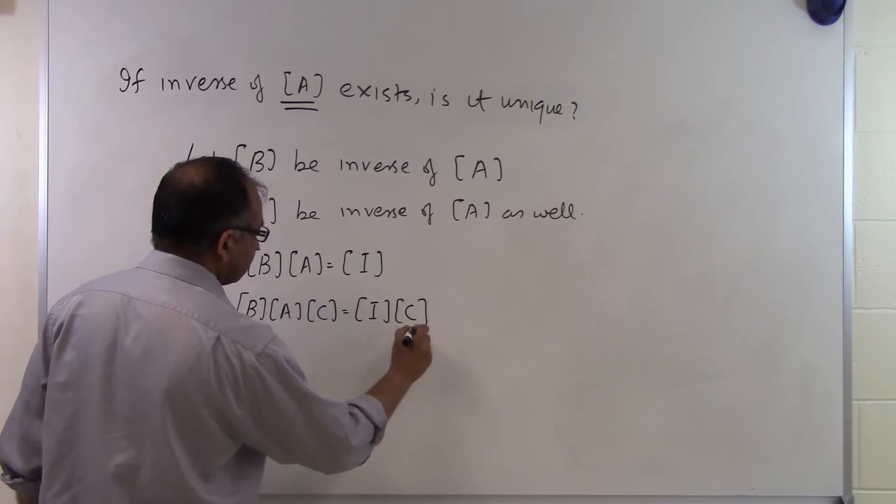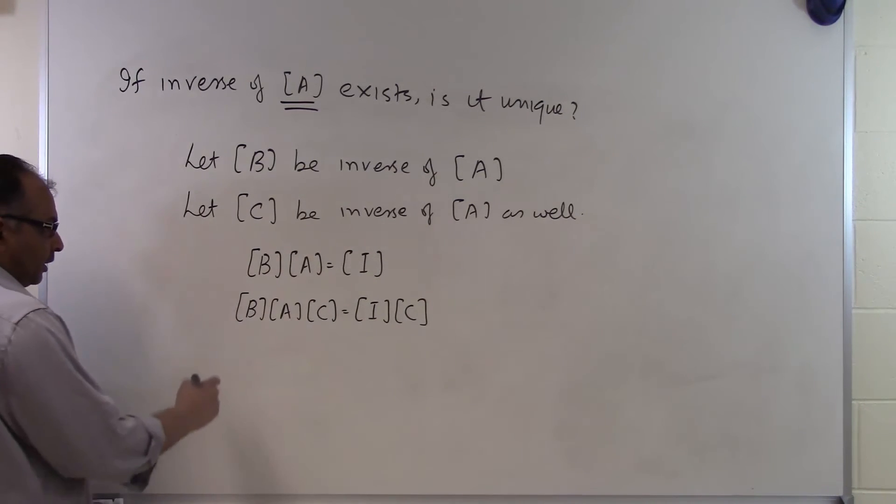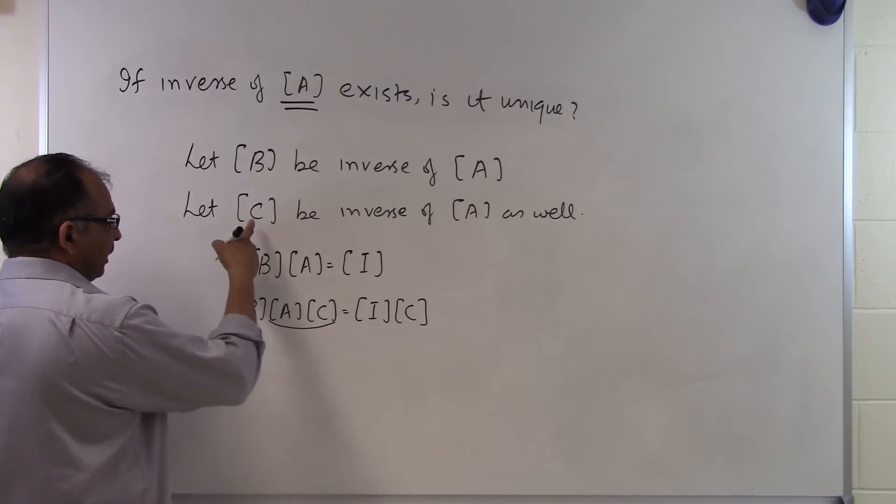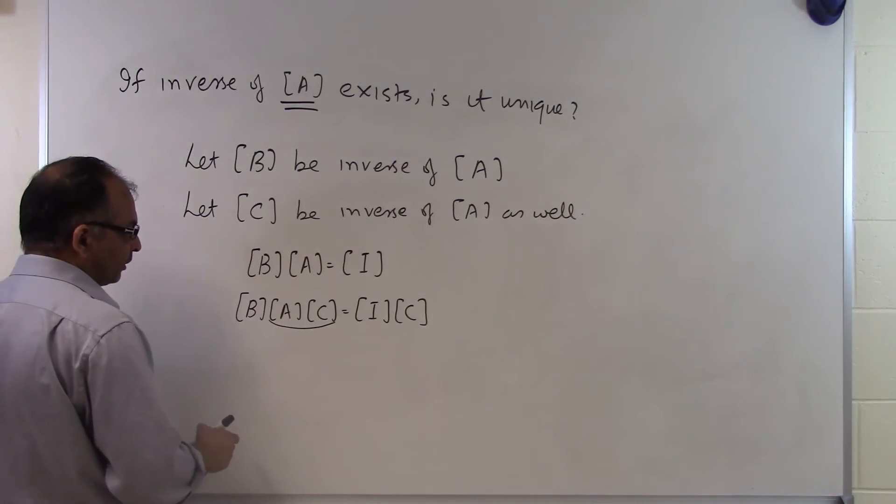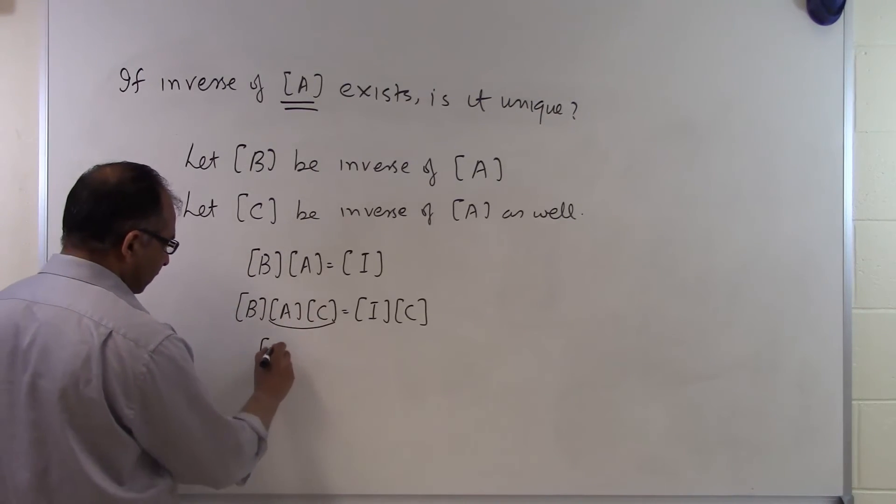So we are going to say I times C. Now what is A times C going to give me? Because I just said, let C be the inverse of A as well. If C is the inverse of A, then A times C or C times A is also going to be the identity matrix. So B times I will be equal to I times C.